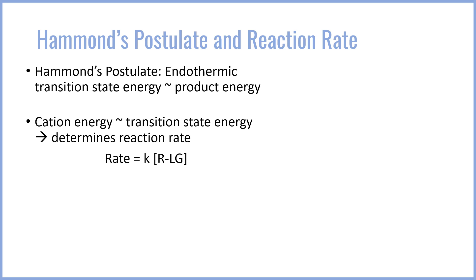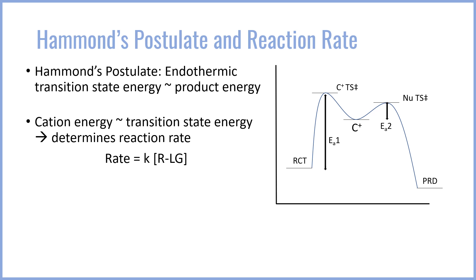Transition state energy is what actually determines reaction rate. So in the case of an SN1 reaction, we find that the rate is simply equal to k times the concentration of the compound of the leaving group. The concentration of nucleophile does not impact the rate of the SN1 reaction. We can visualize this if we go ahead and plot a reaction coordinate. The first step in an SN1 reaction is the breaking of the leaving group bond to give you the cation transition state, followed by the carbocation intermediate.